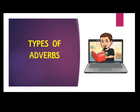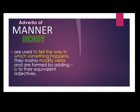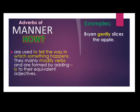I hope that you are clear with the function of adverbs in the sentence. Now, let's move on to the types of adverbs — there are 5 types. The first is the adverb of manner. It answers the question 'how.' Adverbs of manner are used to tell the way in which something happens. They mainly modify verbs and are formed by adding -ly to their equivalent adjectives. For example: 'Ryan gently slices the apple.' How did Ryan slice the apple? The answer is 'gently.'